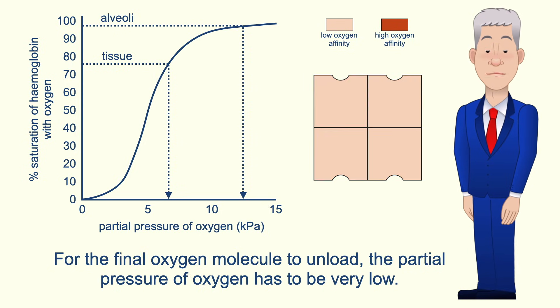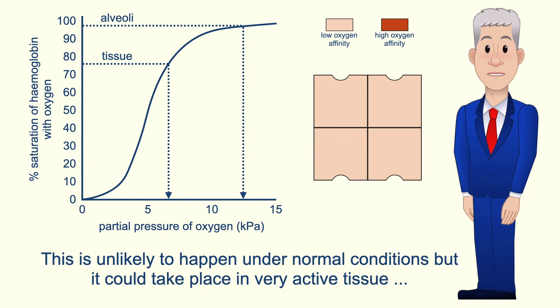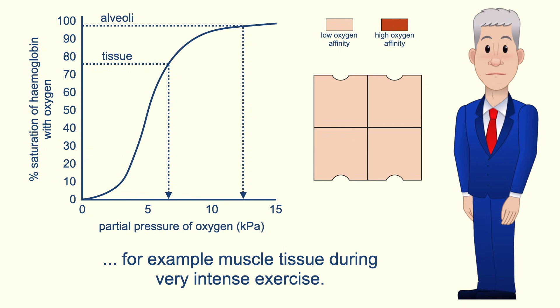Now for the final oxygen molecule to unload, the partial pressure of oxygen has to be very low. This is unlikely to happen under normal conditions but it could take place in very active tissue, for example muscle tissue during very intense exercise.